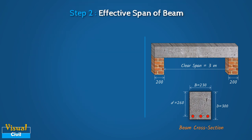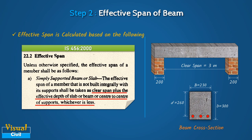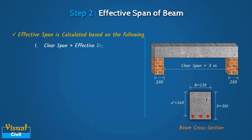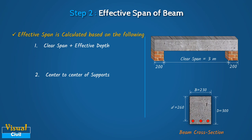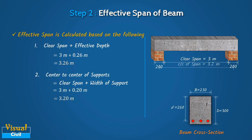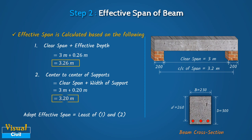In Step 2, calculate the effective span of the beam referring to clause 22.2 of IS456 as clear span plus the effective depth of the beam, or center to center of support, whichever is less. Clear span plus effective depth equals 3.26 m, and center to center of support is 3.20 m. Adopt effective span equal to the least value, which is 3.2 m.